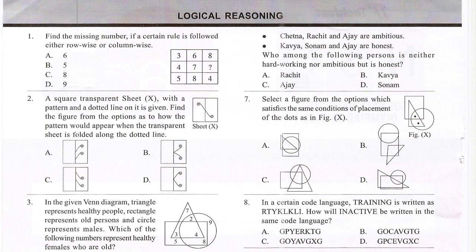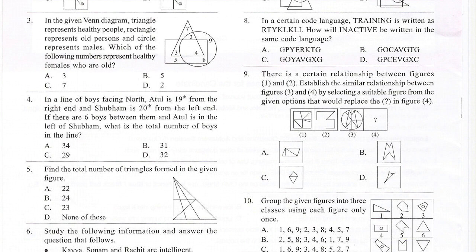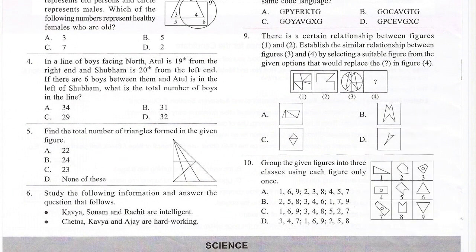Question 8: In a certain code language, 'training' is written as a given code. How will 'inactive' be written in the same code language? Question 9: There is a certain relationship between figures 1 and 2. Establish the similar relationship between figures 3 and 4 by selecting a suitable figure from the given options that would replace the question mark in figure 4. Question 10: Group the given figures into three classes using each figure only once.